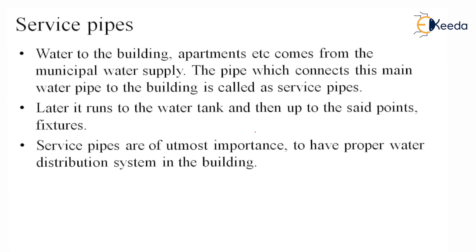Service pipes. Water to the building, apartments, etc. comes from the municipal water supply. The pipe which connects this main water pipe to the building is called a service pipe. These pipes then run to the water tank and up to the set points and fixtures. Service pipes are of utmost importance for proper water distribution in the building.